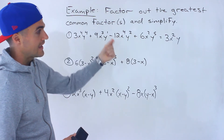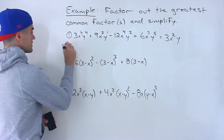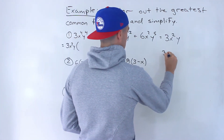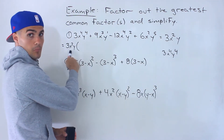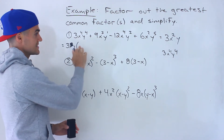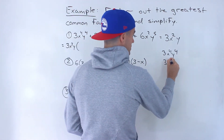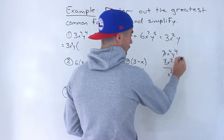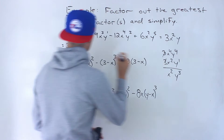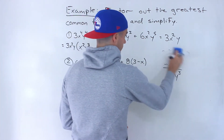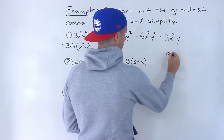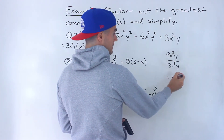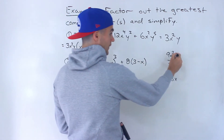So 3x²y is the greatest common factor. What this equals is 3x²y, and then to figure out what's left, we take each term and divide it by that greatest common factor. If we take the first term divided by 3x²y, the 3s cancel out, x⁴ divided by x² gives us x², and y⁴ divided by y¹ — subtracting exponents — gives us y³. Then taking 9x³y divided by 3x²y: 9 divided by 3 is 3, x³ divided by x² is x¹, and the y's cancel out.